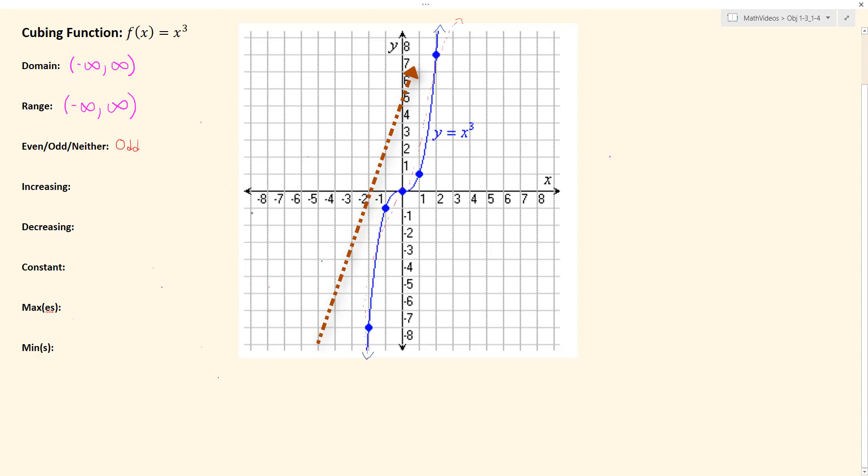And so our graph increases across from negative infinity to infinity. It never changes from increasing. It stays increasing from negative infinity to infinity.